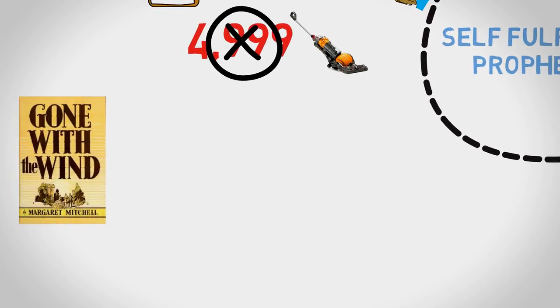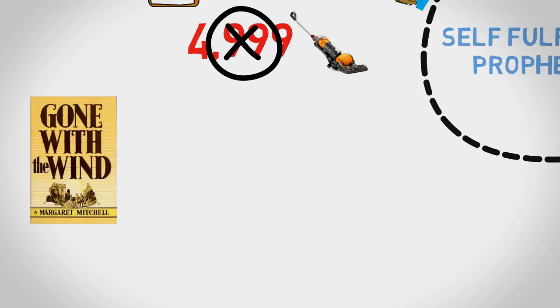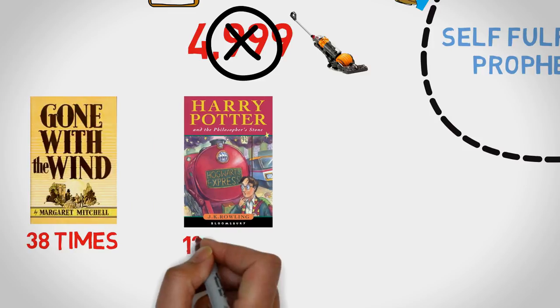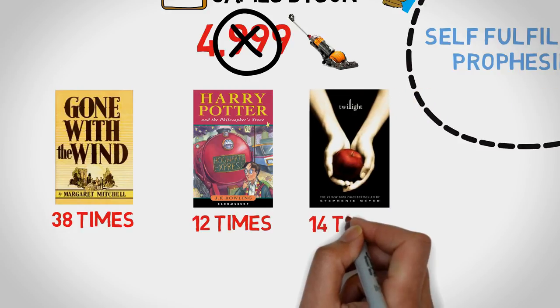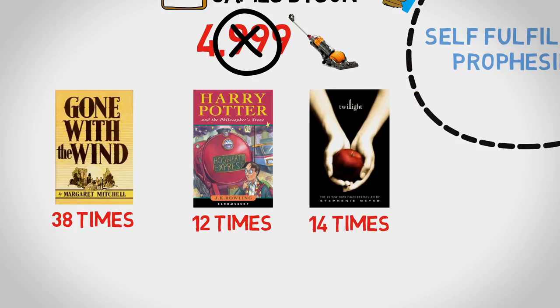Let's look at the famous book, Gone with the Wind. This was rejected 38 times before being published. Harry Potter was rejected 12 times and Twilight was rejected 14 times. If we look for examples within Islamic history...